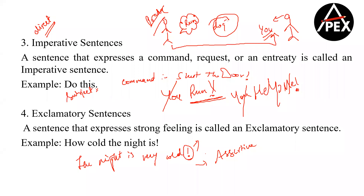Instead of saying 'could you please send me,' had you told me 'please send me,' that would have become an imperative sentence. 'Run' — it is an imperative sentence.